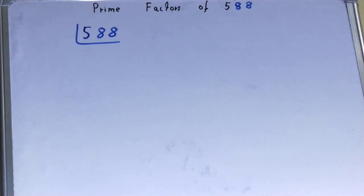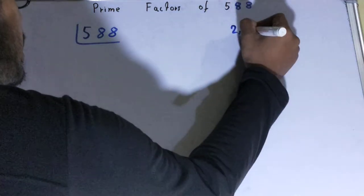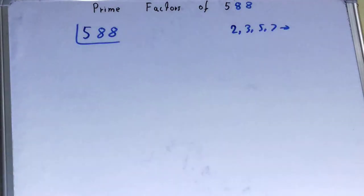So your prime numbers are numbers that are divisible by one and itself only, like 2, 3, 5, 7 and so on. Alright.